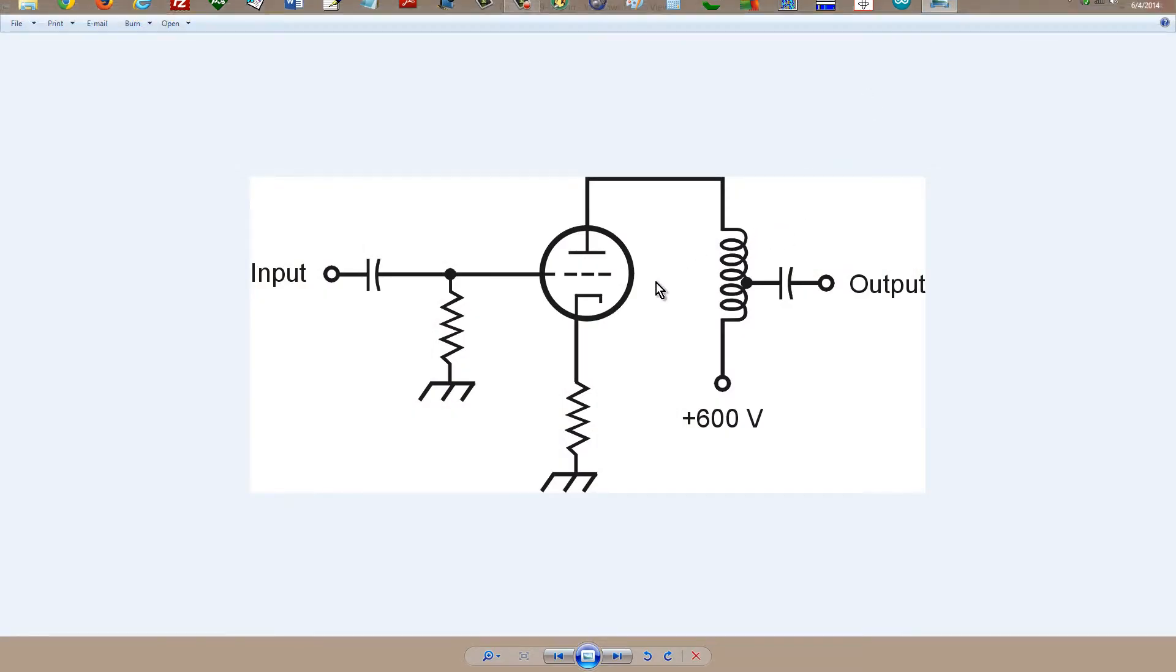Figure 29-4, which shows a common cathode amplifier configuration or circuit configuration using a triode vacuum tube. The filament is not shown. This is an indirectly heated cathode triode tube. There is the cathode, the control grid, the only grid in this tube, and the anode or the plate.